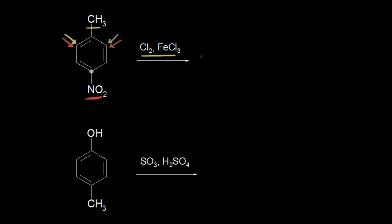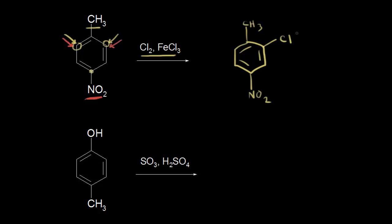So we can go ahead and draw the product. We have our benzene ring with our methyl group and our nitro group. We could have picked either of the two equivalent carbons — it doesn't matter which one, because by symmetry you get an identical product. So we're going to put a chlorine on ortho to the methyl group and meta to the nitro group, and that's the only product we will get.